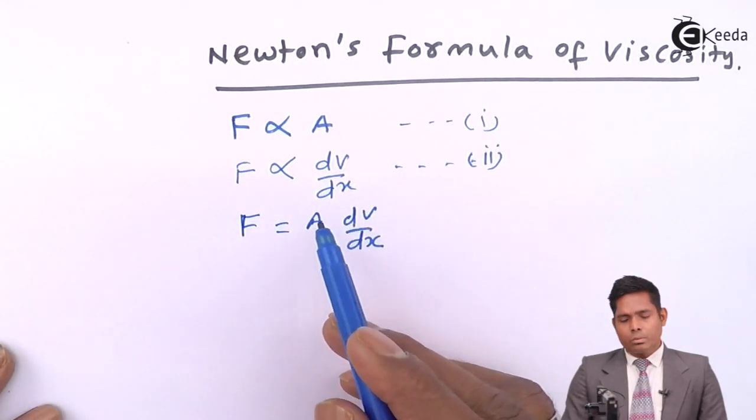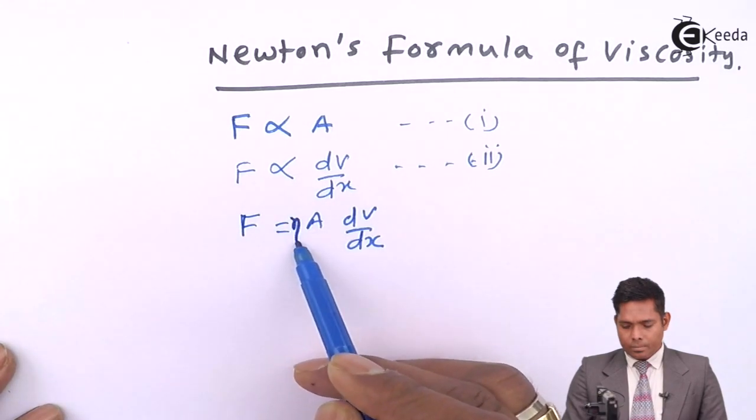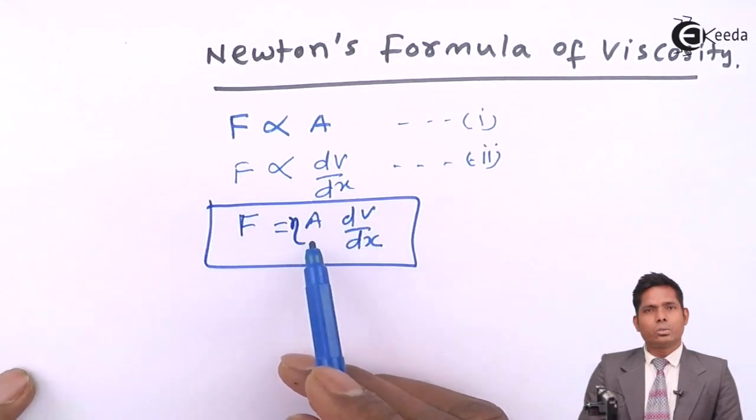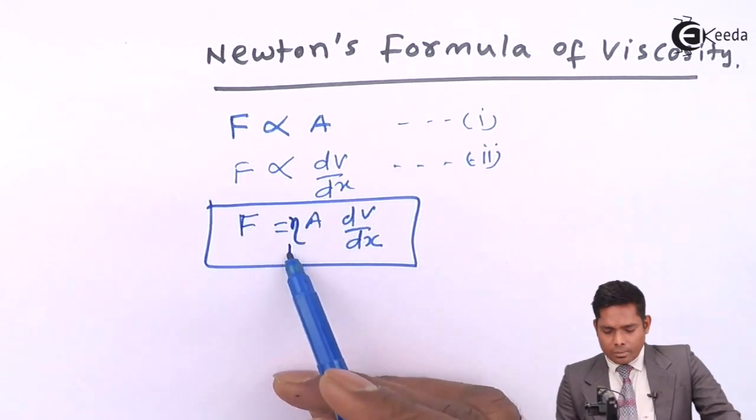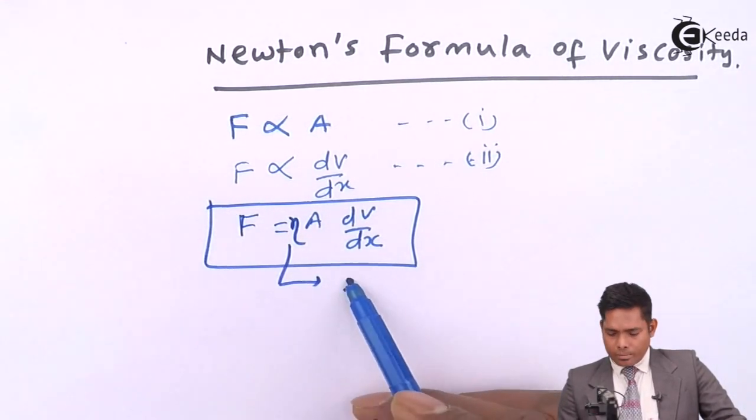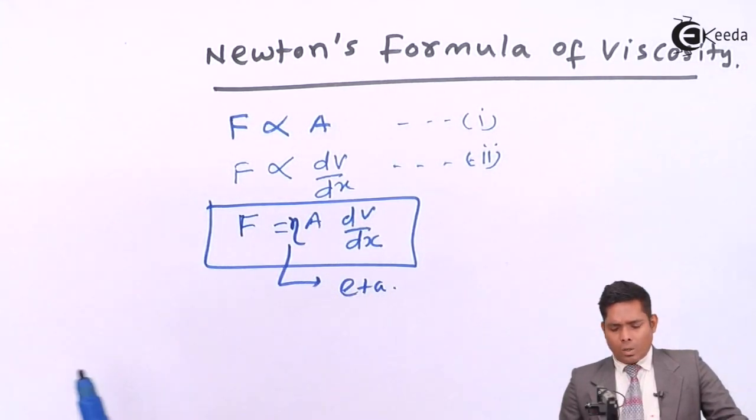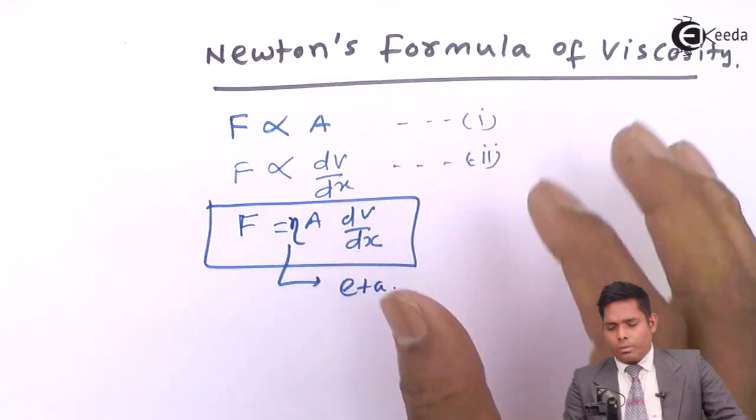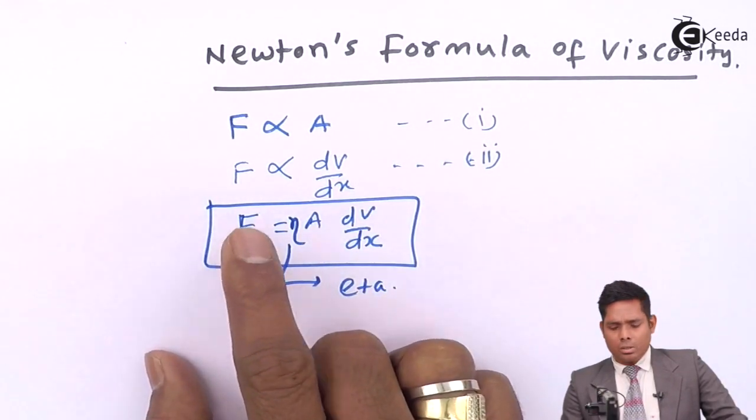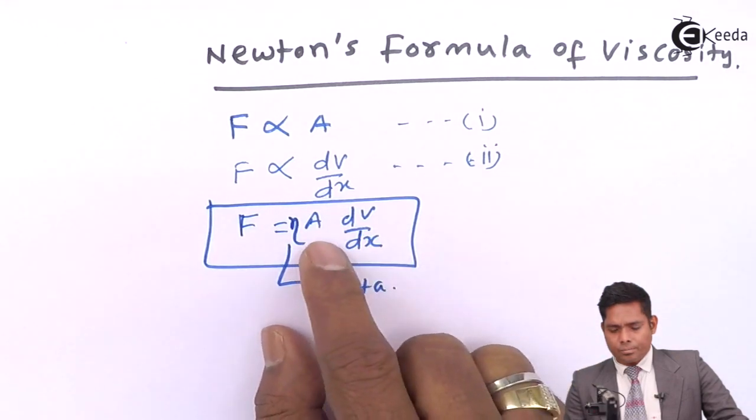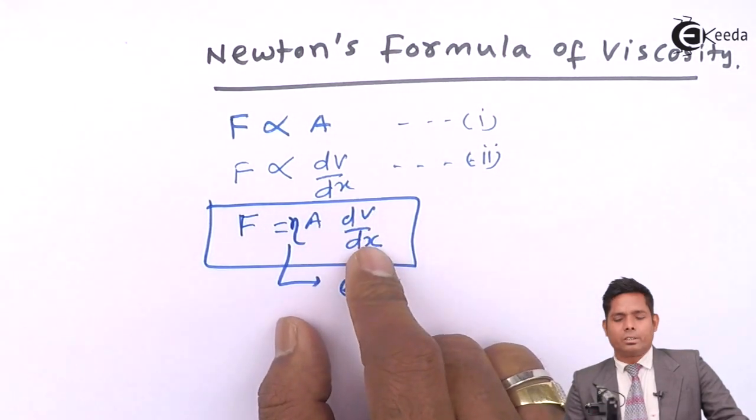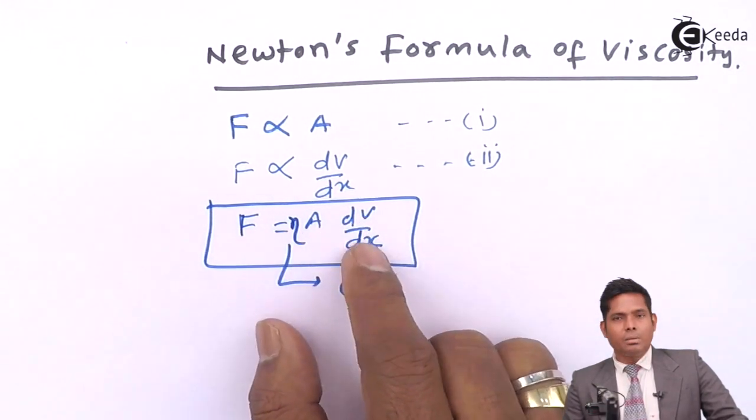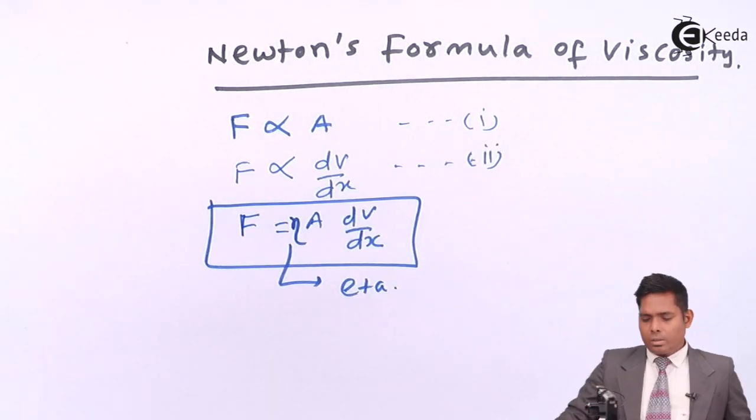Now, some constant should be introduced because of the proportionality over there. I introduced this constant, that is called eta. It is read as eta. Now, this is Newton's formula for viscosity. This is viscous force. The viscous force is proportional to the area of the layers and velocity gradient. So F is eta A dv by dx. This is what is the law.